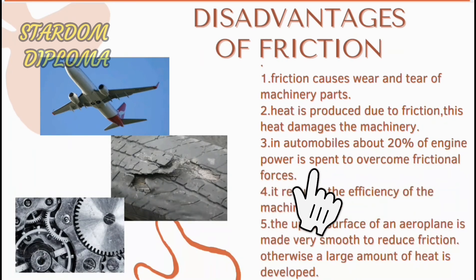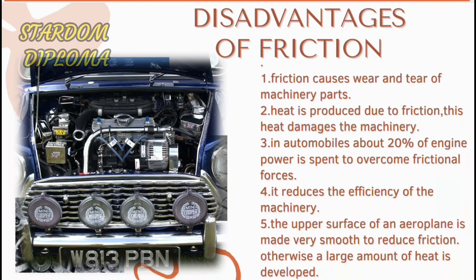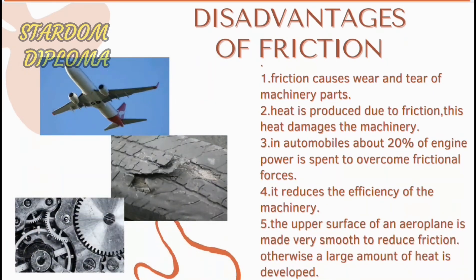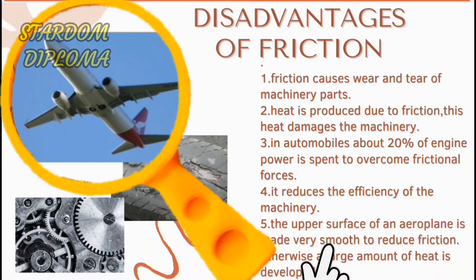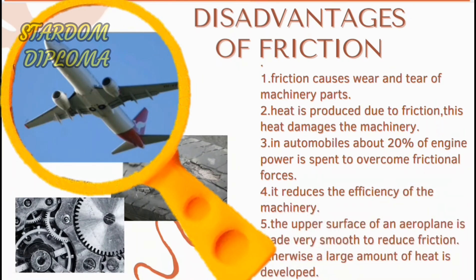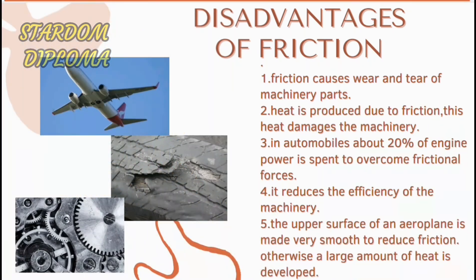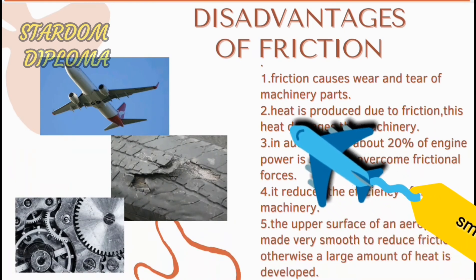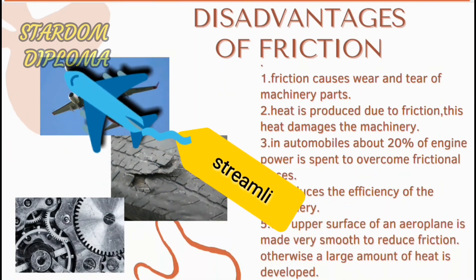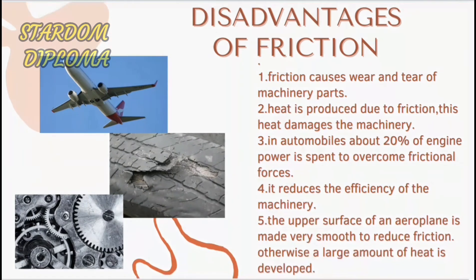In automobiles, about 20% of engine power is used to overcome frictional forces — to reduce friction and cool down the heat generated. This reduces the efficiency of machinery, and as the machinery gets older, its efficiency decreases further. The upper surface of an aeroplane is made very smooth to reduce friction; otherwise, a large amount of heat would be developed. This is called streamlining — aeroplanes have no sharp edges and are made perfectly smooth to decrease friction.